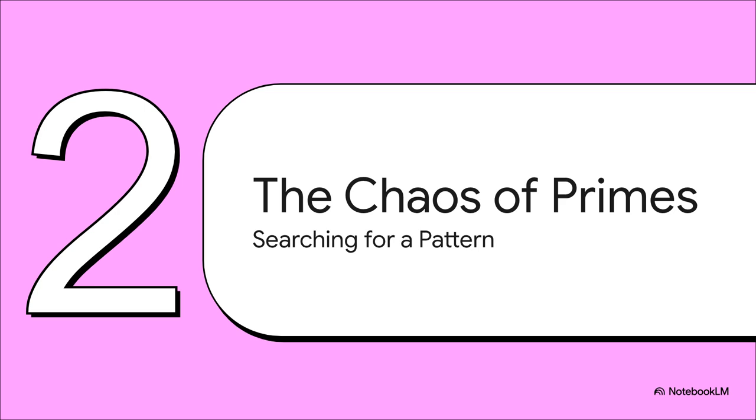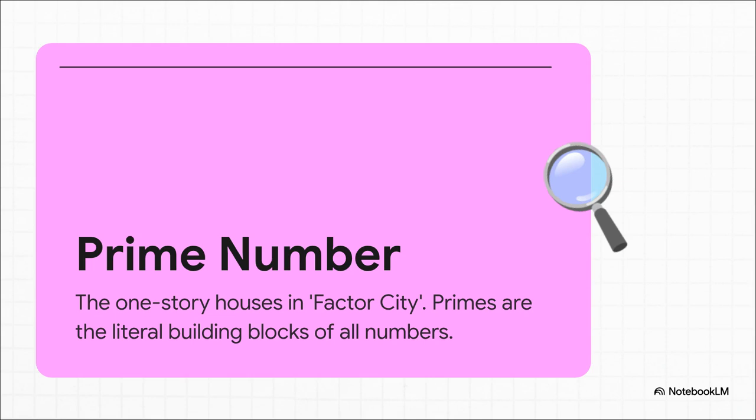So, to really understand the hypothesis, we've got to rewind. We have to go back to the fundamental problem that started this whole thing. The seemingly random, totally chaotic nature of prime numbers. Okay, think of it like this. Imagine all the numbers are buildings in a massive city. The prime numbers, you know, 2, 3, 5, 7, 11, and so on, they're like the basic one-story houses. Every other number, like 6 or 12, is a bigger building made by multiplying those primes together. Now, we've known since ancient Greece that these primes go on forever. But where are they? They seem to pop up randomly, with no rhythm or reason.